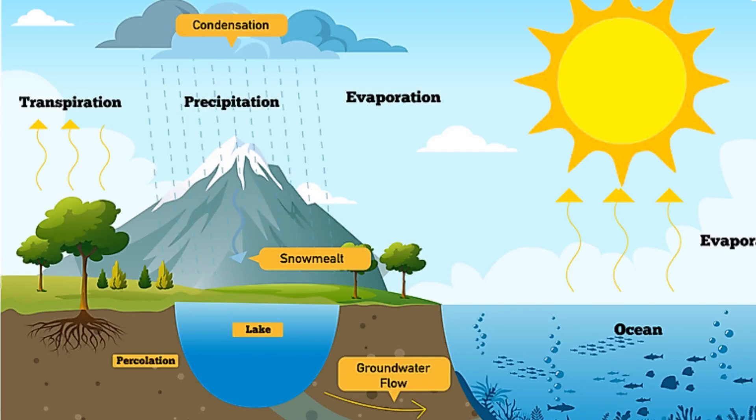First of all, due to the sun's rays, the water available on earth gets evaporated and it goes up and mixes with the sand particles present in the atmosphere and forms as a cloud.